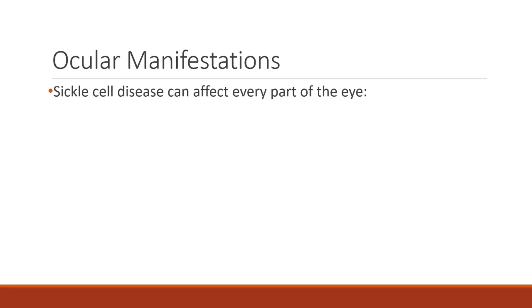Sickle cell disease affects many organ systems and can affect every part of the eye. With regards to the orbit, bone marrow content increases in the orbital bones of small children, resulting in lid edema, proptosis, ophthalmoplegia, and diplopia.